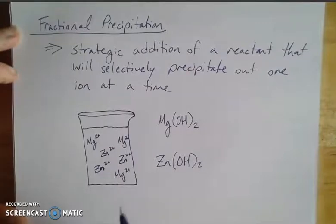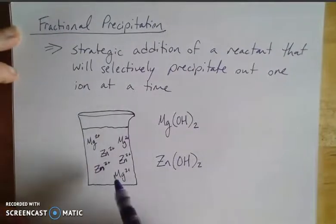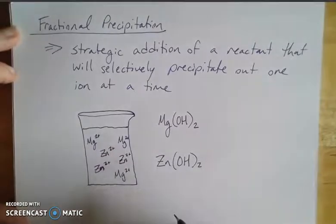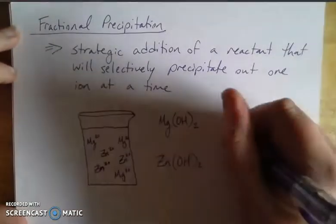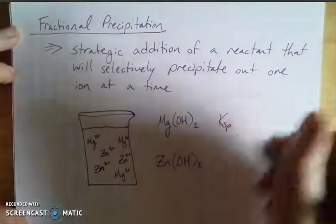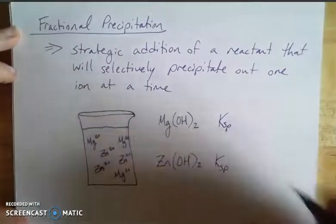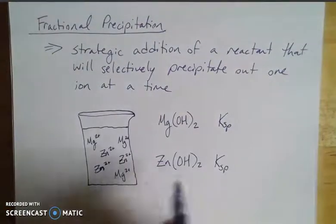For example, take magnesium and zinc, which can both make hydroxides. So if we know the KSP values for each of these, then if I was to add a base to this,